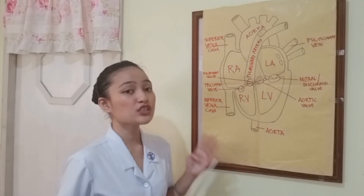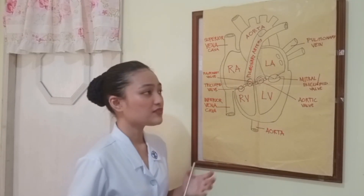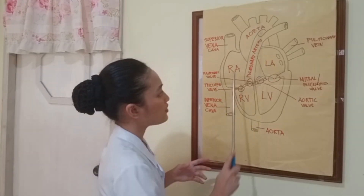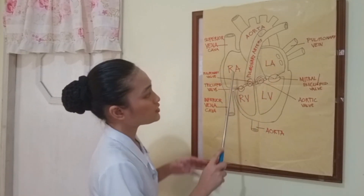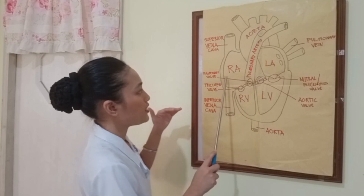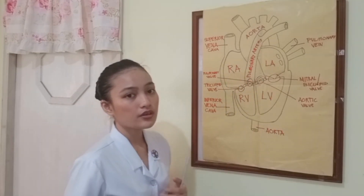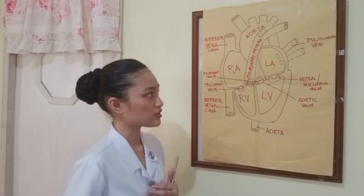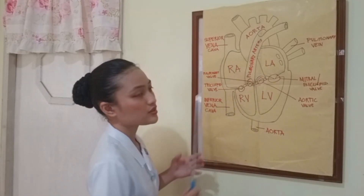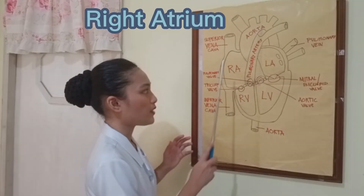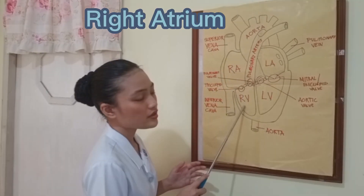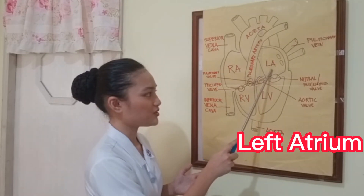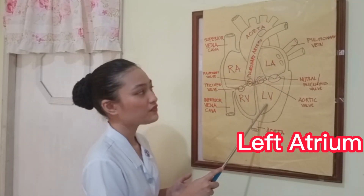The heart has four chambers. It is divided into the right and left sides. The chambers on the upper portion are called the atrium, and the chambers in the lower part are called the ventricles. This one on the right side is called the right atrium, this one is the right ventricle, this is the left atrium, and this is the left ventricle.